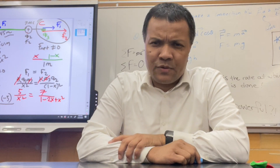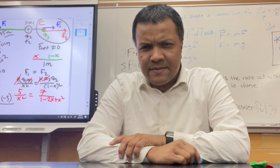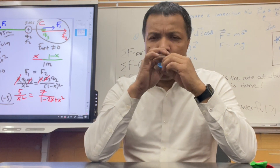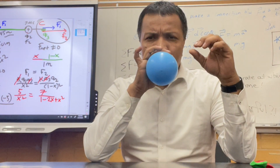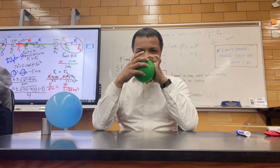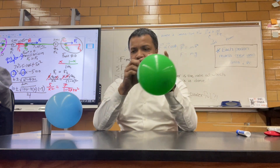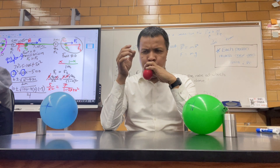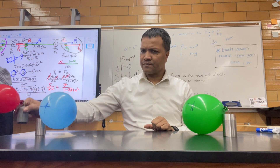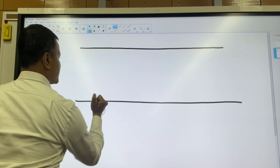Today we're going to make a connection between charges and force. Along the way we're going to discover that like charges repel and opposite charges attract. Let's consider three charges — a blue charge of 5 microcoulombs and a green charge of 7 microcoulombs placed on a line one meter apart. We have a red charge q3: where do we place it so it experiences zero net force?